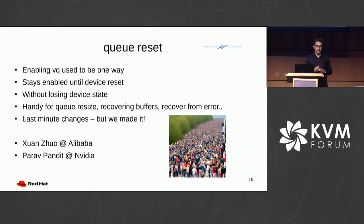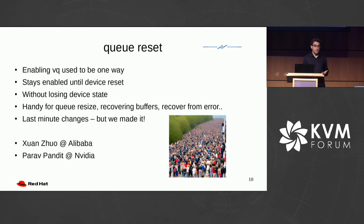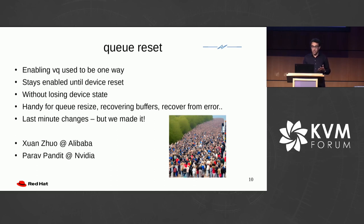Resetting the whole device is a really, really slow operation. First of all, you have to set it up again — that takes a lot of time, lots of VM exits. Besides, it's also complex for the driver, which has to maintain a shadow copy of the device state in its memory so that it can restore it after the reset. Another use case is when you get stuck — maybe the virtqueue is not progressing, you suspect there's some kind of bug. Without the whole device reset, you cannot get out of this situation. So the new functionality is that you can reset individual virtqueues.